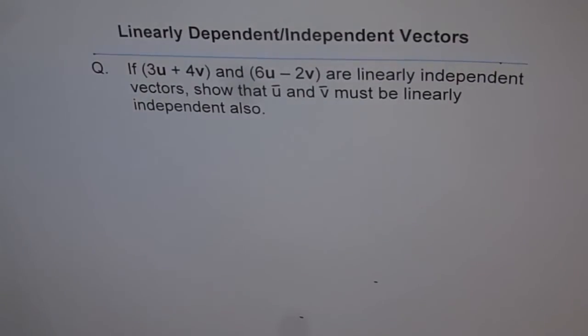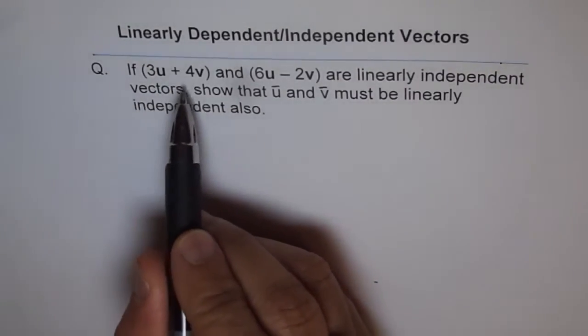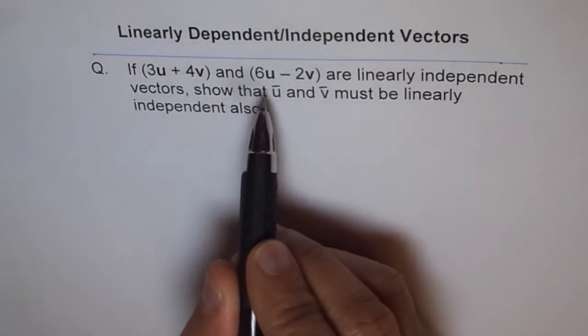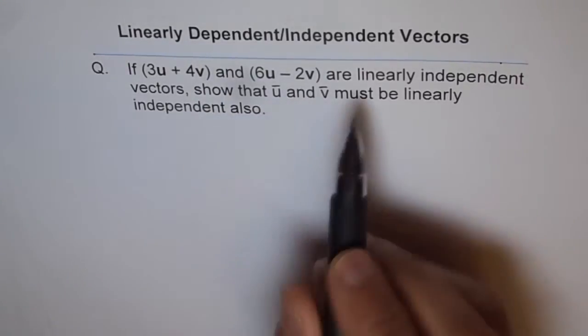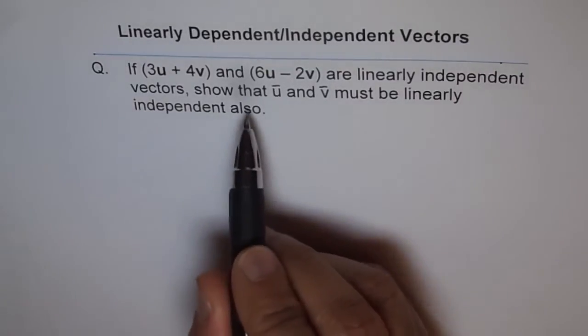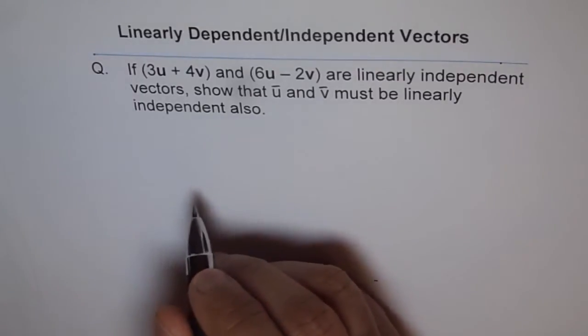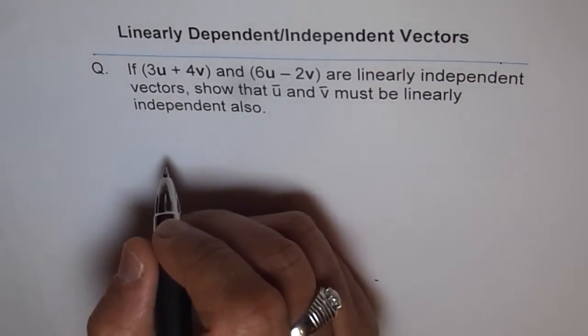Here we have an interesting question on linearly independent vectors. The question is: if (3u + 4v) and (6u - 2v) are linearly independent vectors, show that u and v must be linearly independent also. Now let's write down the linear combination.